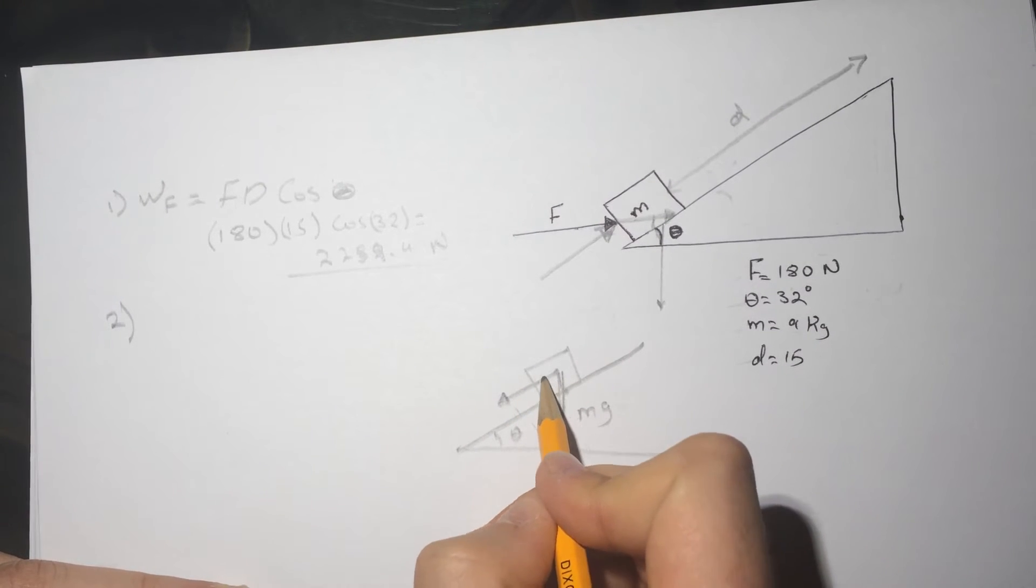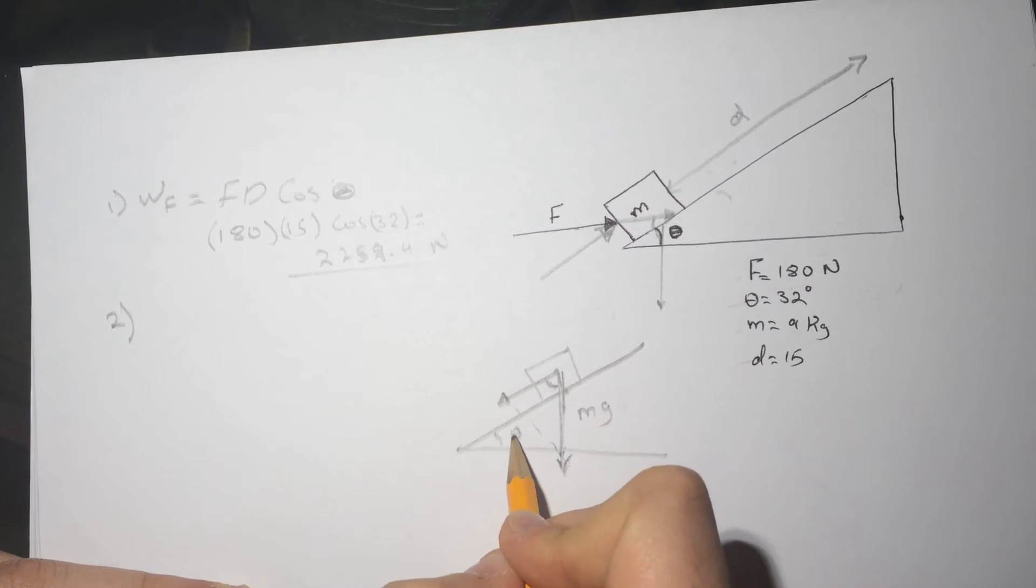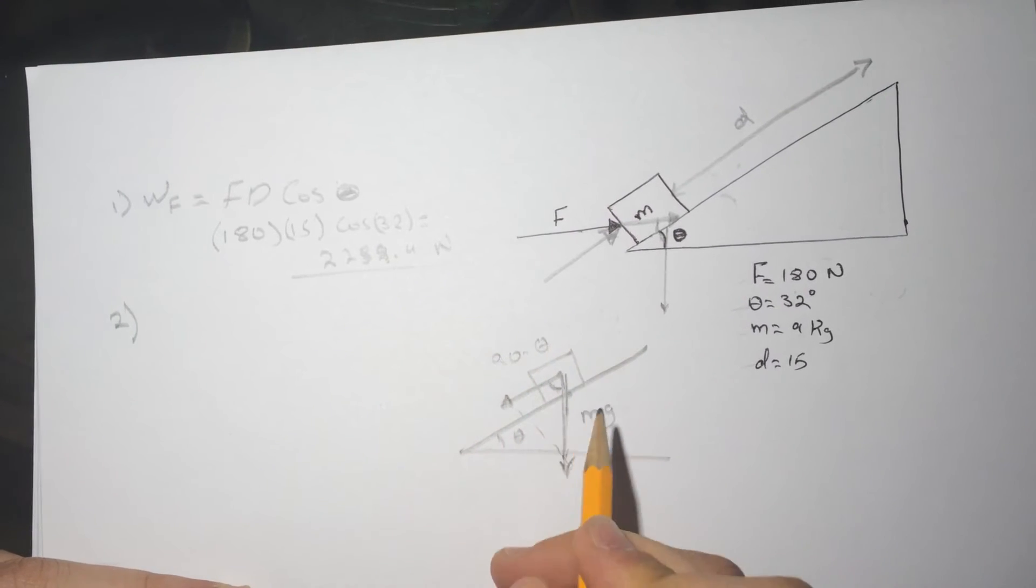So we need to find this part of the mg vector here, this part, and this angle is the 90 minus theta.